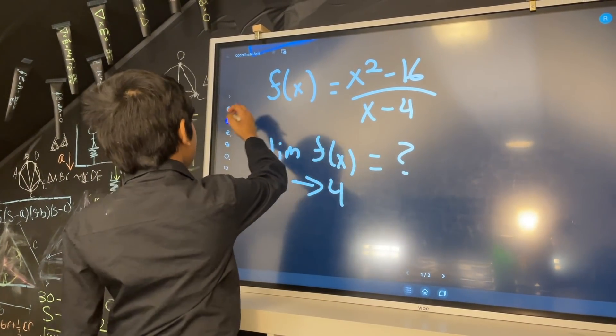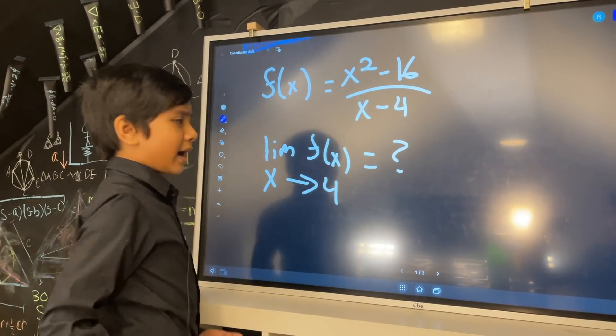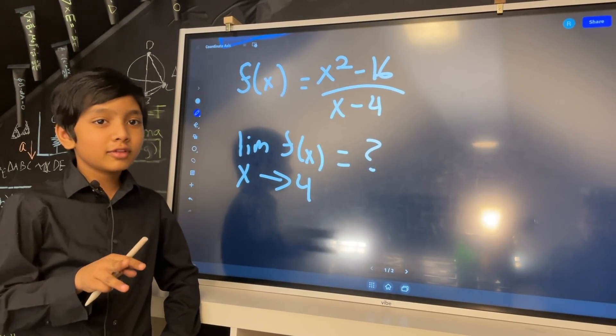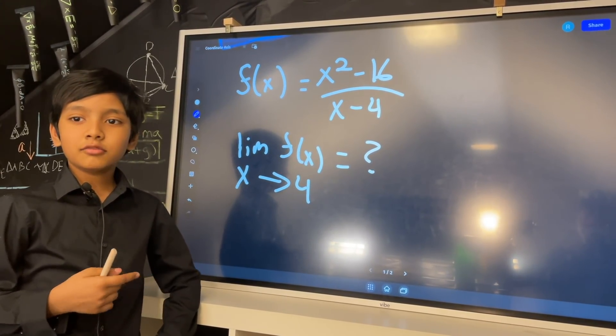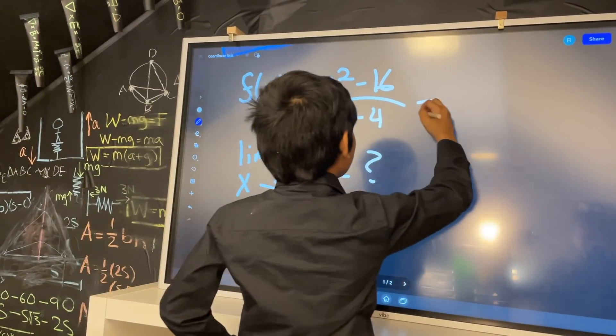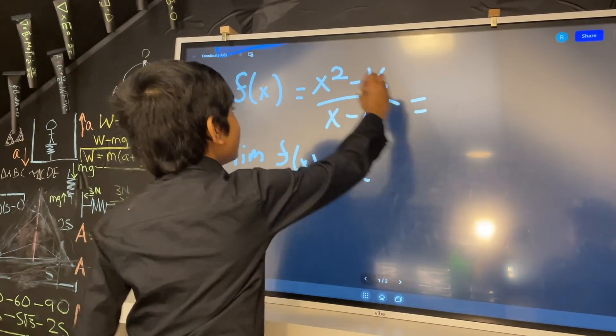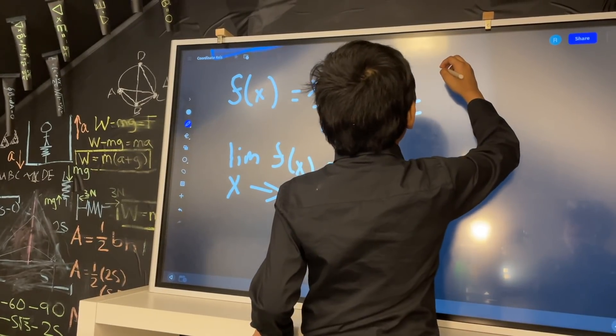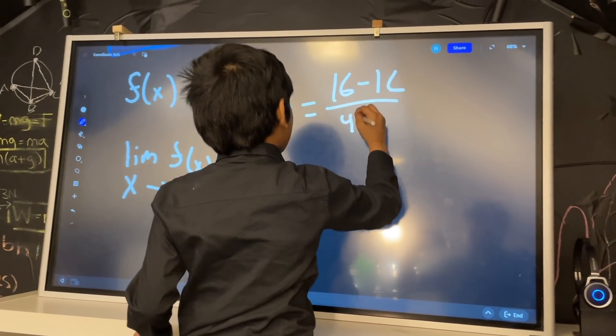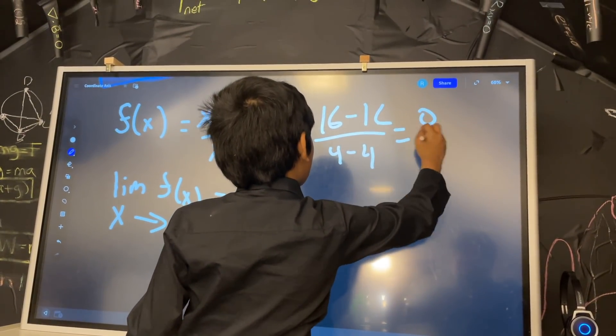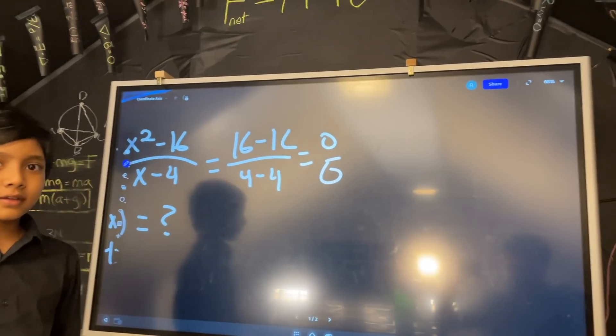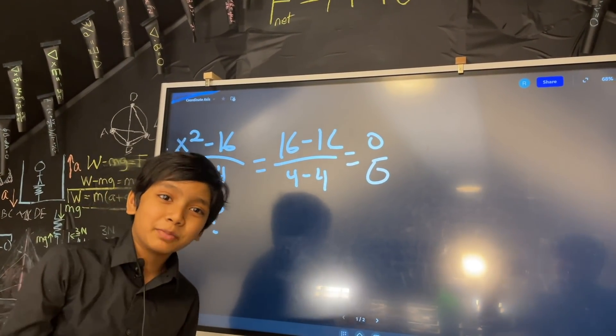So I want all you guys including Mr. Alexander to guess how we can do this. Well, you would write the normal way: x squared is 4, or 4 squared is 16, minus 16 over 4 minus 4. Zero over zero, and that's going to get you in a bit of trouble with the math police.